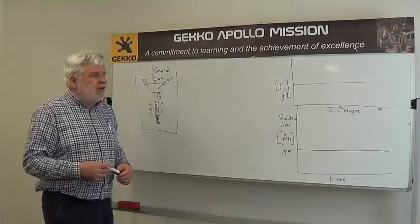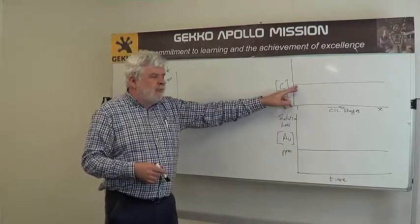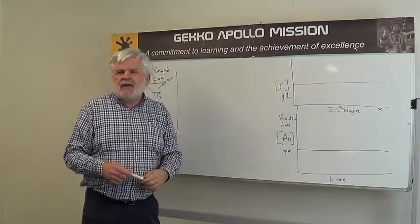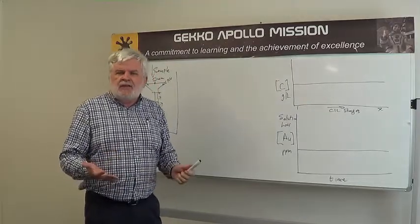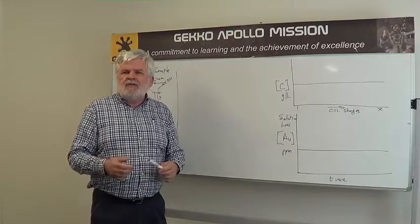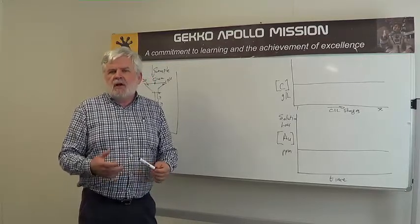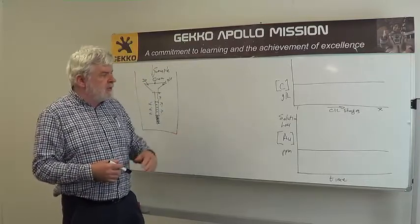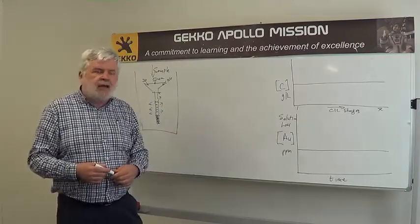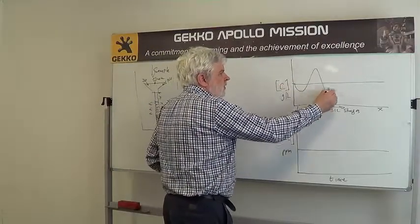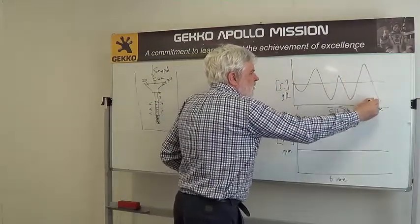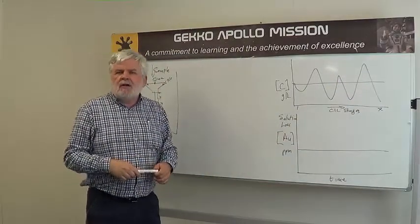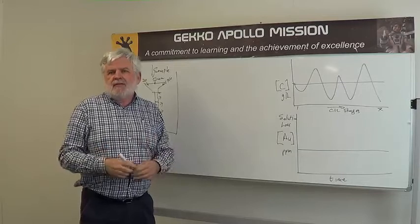Looking at this first graph, this is the sort of profile we want — as we go down the circuit, we're looking for the carbon concentration to be even in every tank. But the problem is that we control these circuits largely in a manual system. What we usually find is carbon concentration not looking like that even distribution, but perhaps looking uneven at any given snapshot.